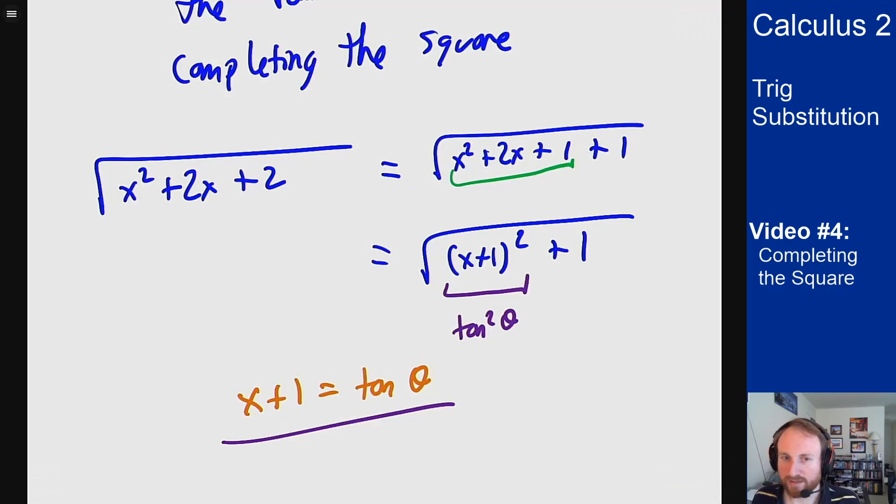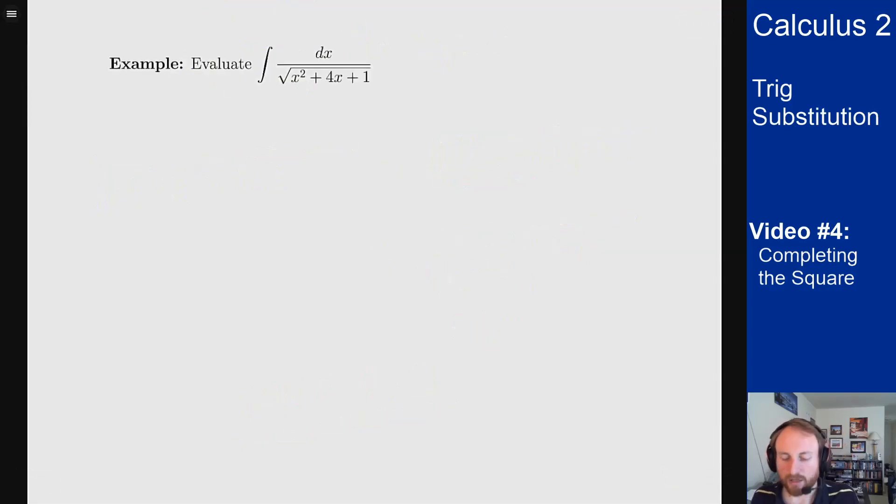It's the example that's worked out so you can see what this stuff looks like. So we want to evaluate this integral dx over root x squared plus 4x plus 1. So it's a quadratic on the bottom of the square root, inside the square root, makes me think this should be trig sub but I don't see anything in the right form there that I can actually deal with.